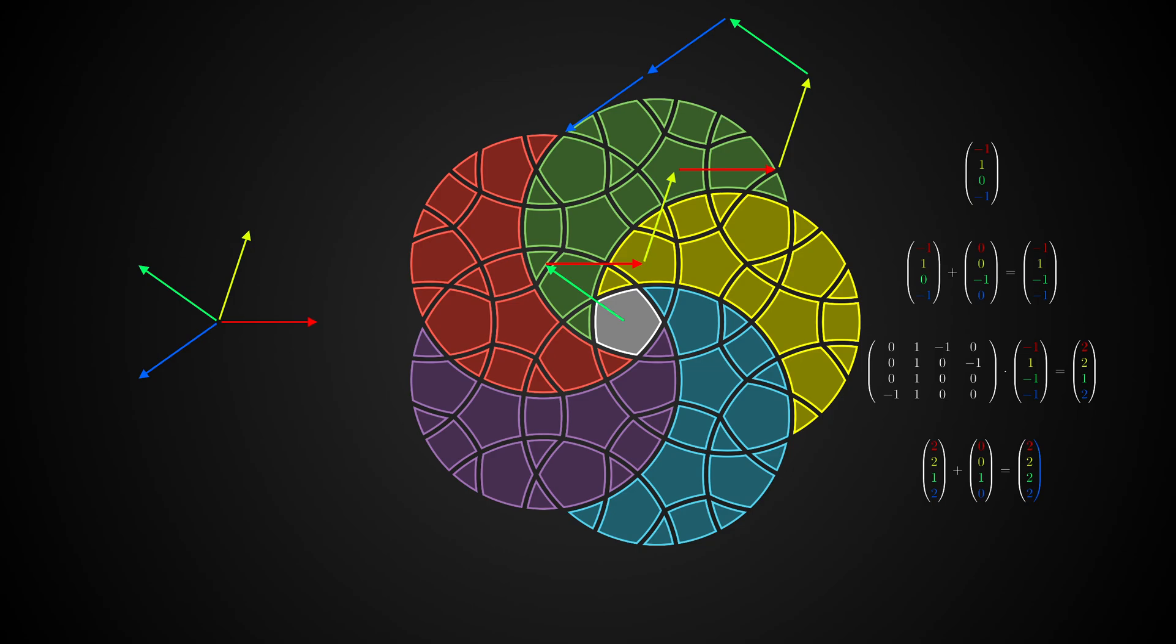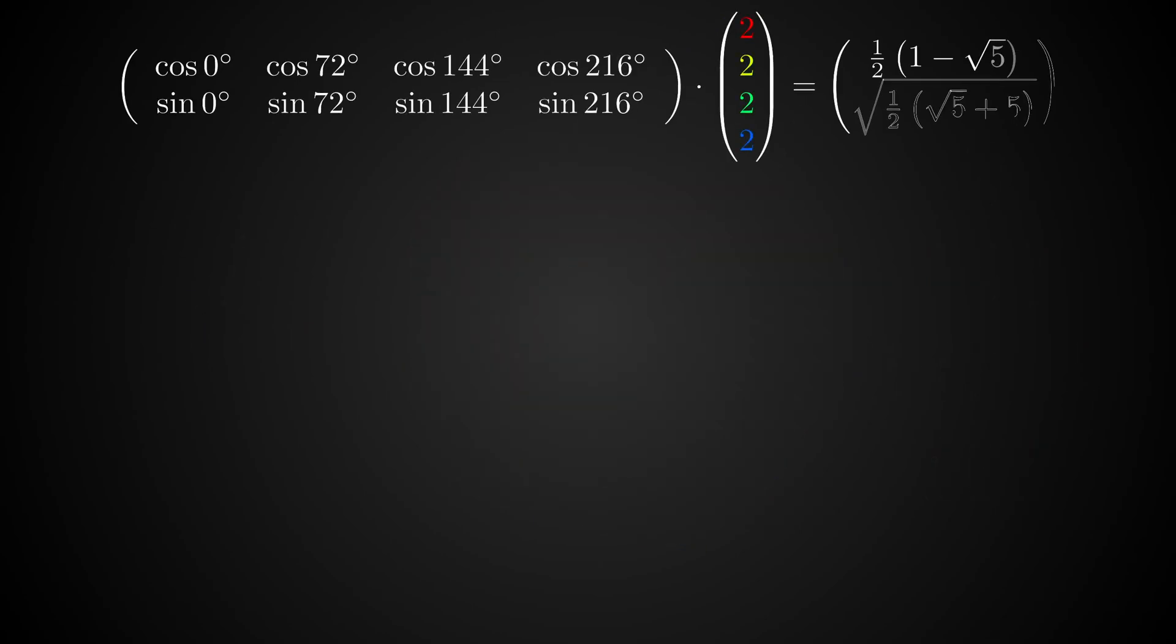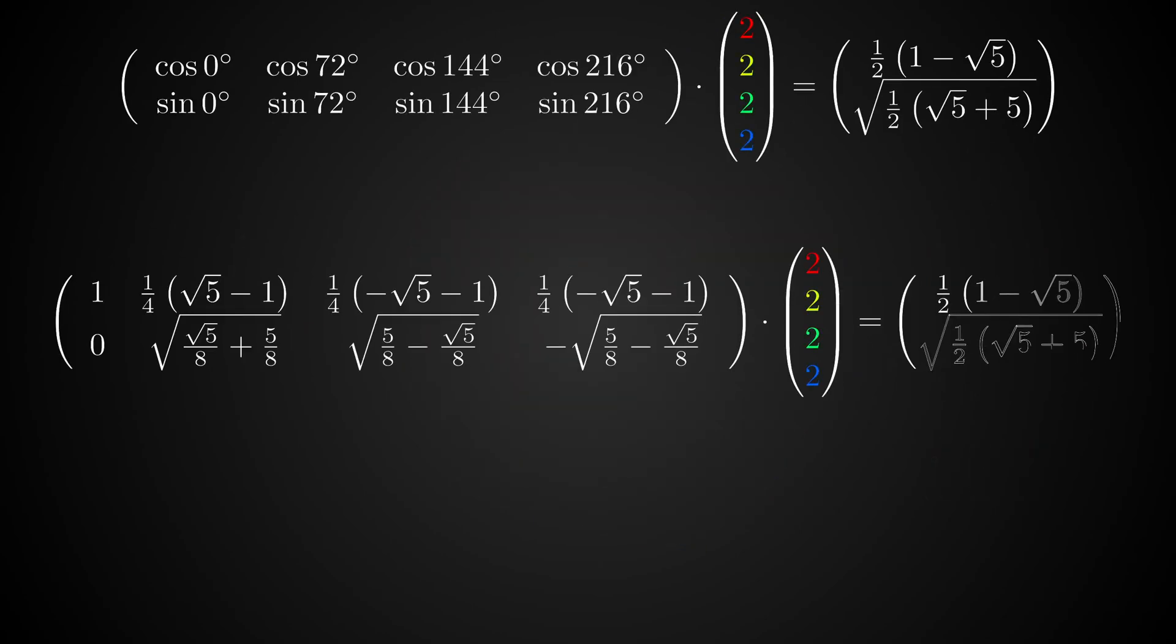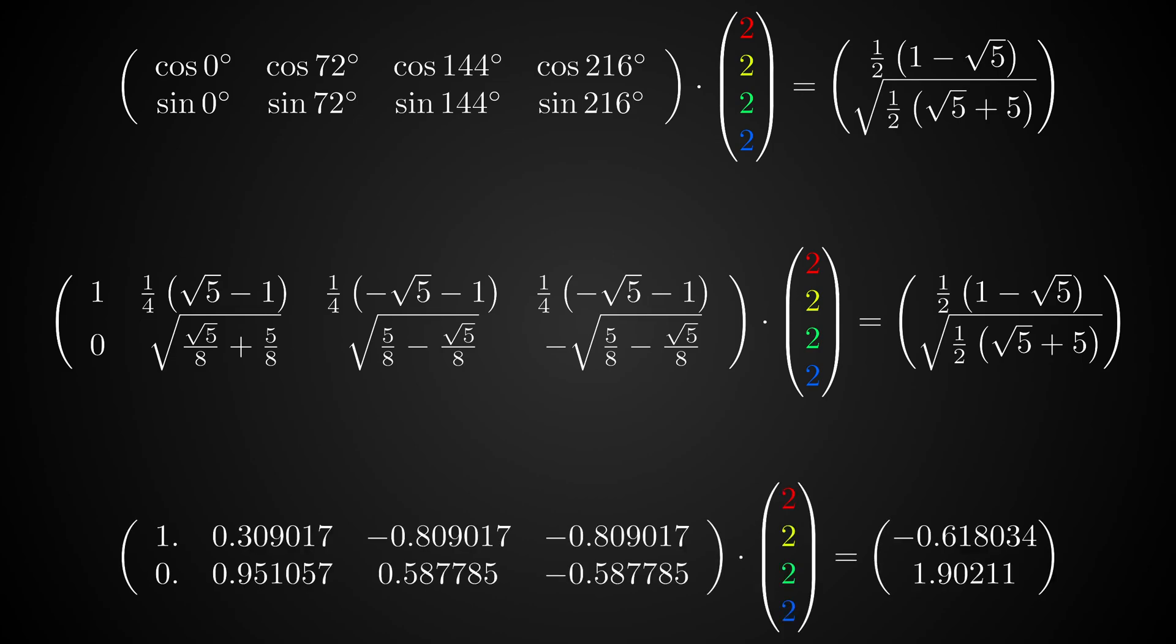Now the computer still needs to know where to draw the pieces on the screen, so we need to convert our four-dimensional vectors back into x and y coordinates. To do that, we use this 2 by 4 matrix containing some values of the cosine and sine function. We actually can use numerical approximations here, because the error does not propagate, as we do not continue our calculations with the result.